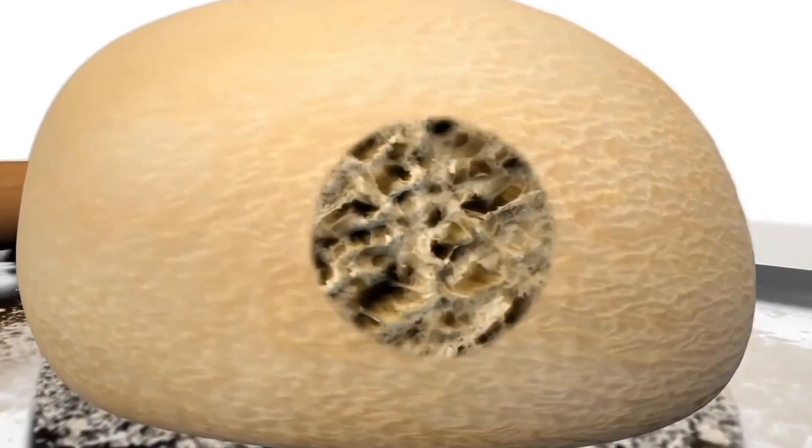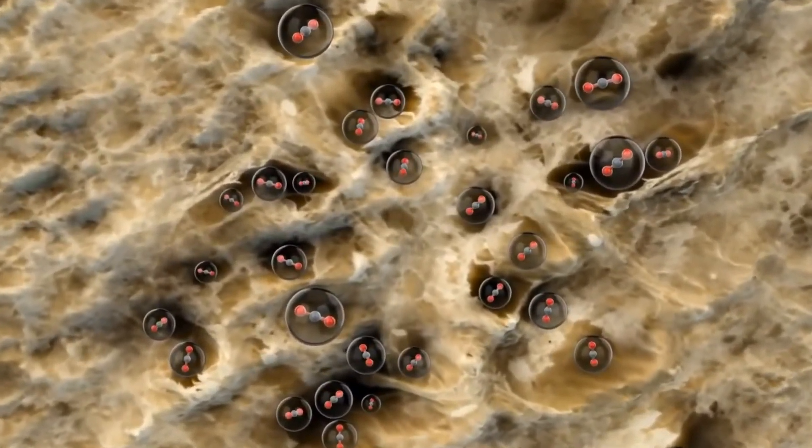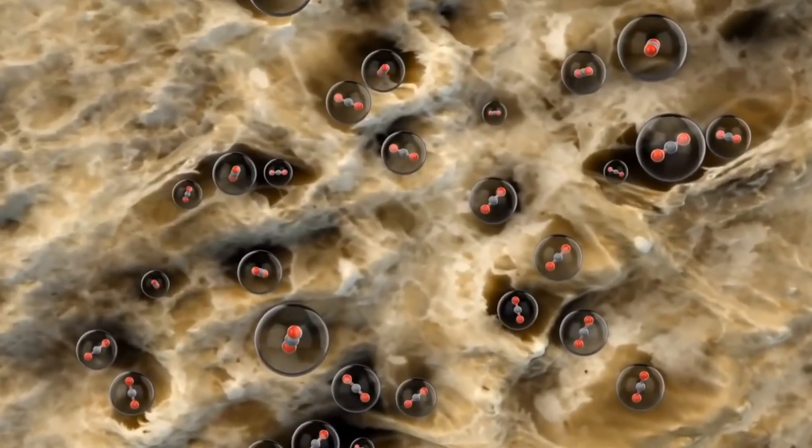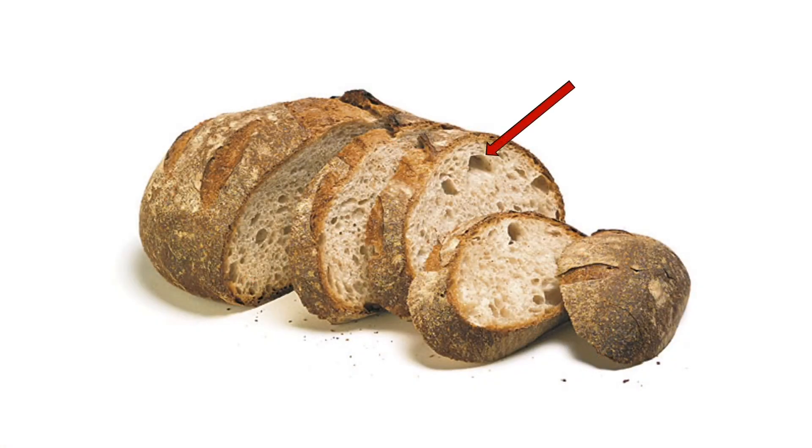But instead of bursting to let the gas out, the flexible dough traps pockets of carbon dioxide, inflating as it does so, and creates wide open spaces inside the loaf.